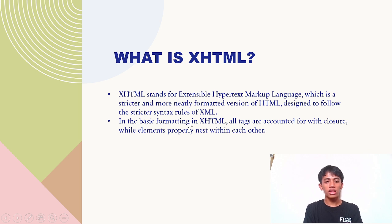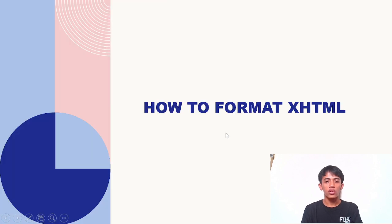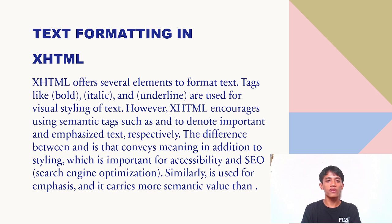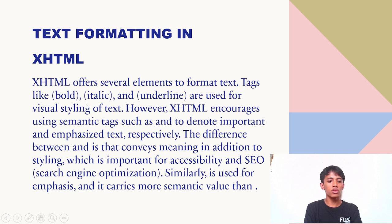In the basic formatting of XHTML, all tags are accounted for with closures and elements properly nest within each other. XHTML offers several elements for formatting text. Tags like bold, italic, and underline are used for visual styling of text.